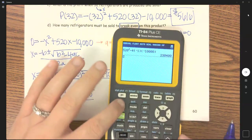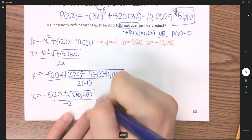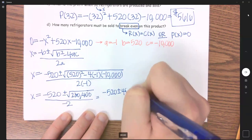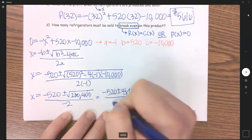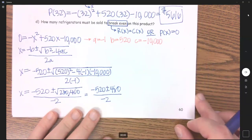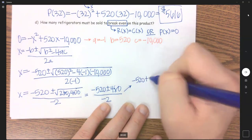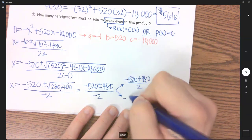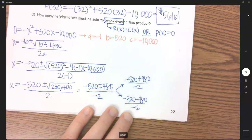That's 230,400. Let's just see if by some chance that is a perfect square, and it is. That is 480, so this is negative 520 plus or minus 480—notice it's not square root 480, it's just 480—all over negative 2. So what are my two answers? We've got negative 520 plus 480 divided by negative 2, and we have negative 520 minus 480 all divided by negative 2.